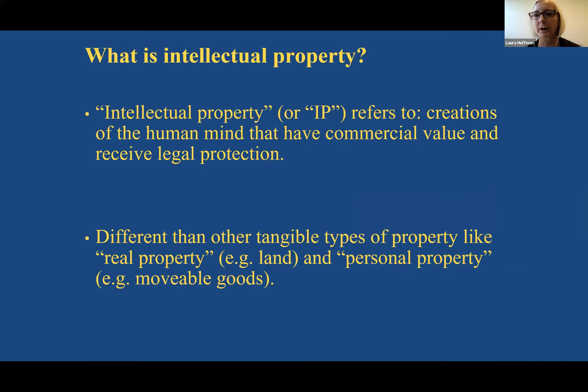Intellectual property is a creation of the human mind that has commercial value and receives legal protection. When you talk to students about intellectual property, you'll be explaining to them what all of those things mean. But it's just another form of property, like real estate, like your personal property — your computer, your clothes, or anything like that. It can be bought, it can be sold, you can buy and sell pieces of it. But it is an intangible form of property.